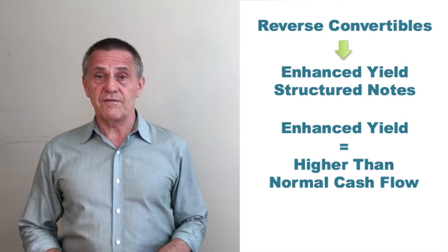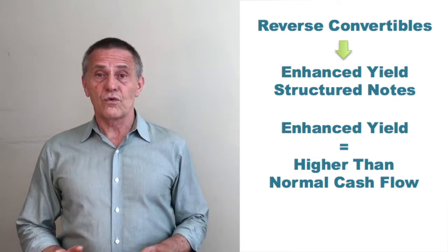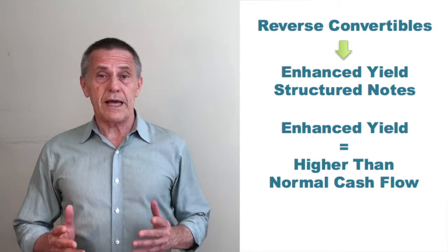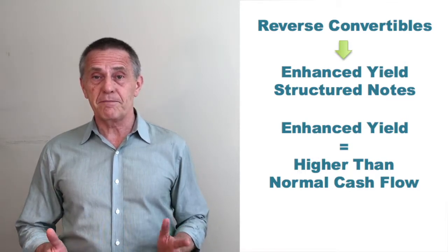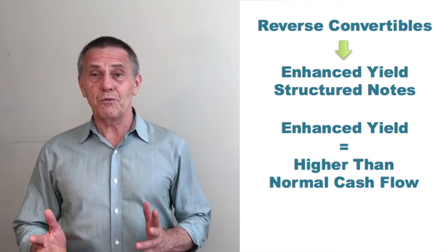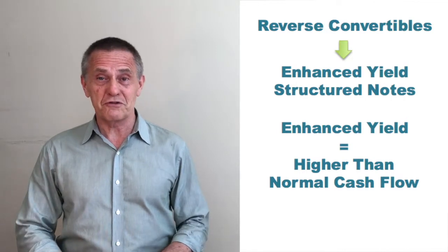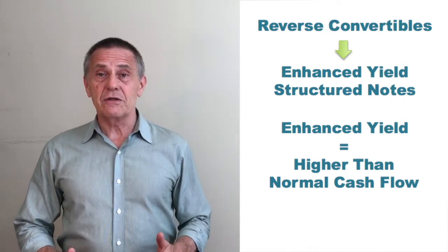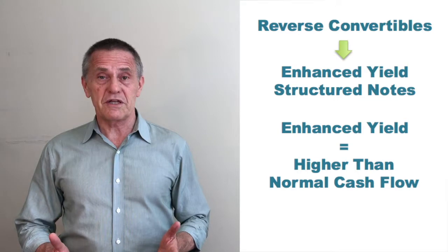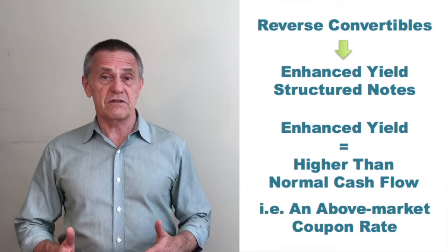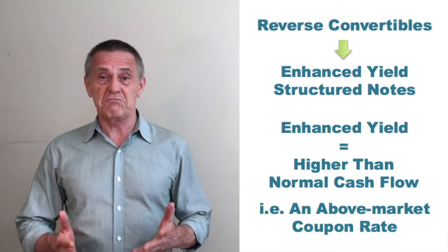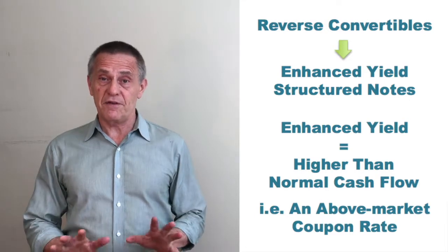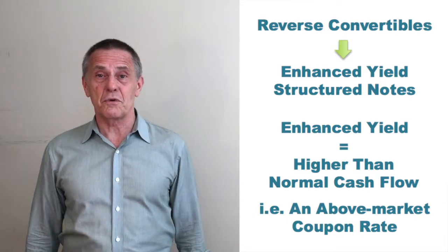Just to give you a sense of that, over recent years, when similar maturity and credit quality debt instruments have paid maybe one to two percent, or in some cases dramatically below that, enhanced yield securities have paid interest rates of 8, 15, in some cases over 20 percent — if the investment works out as the investor hopes.